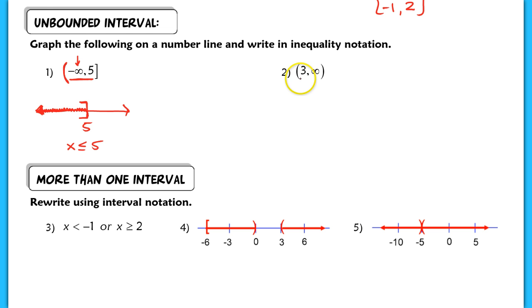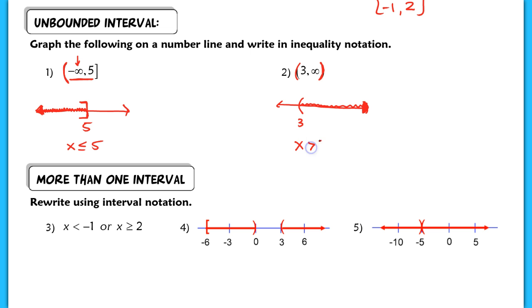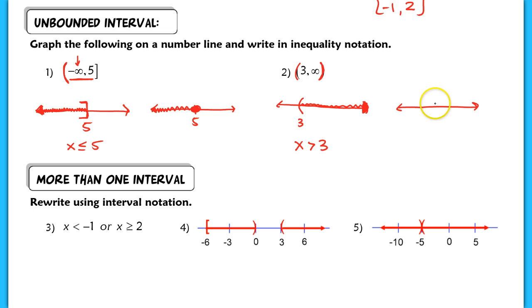In example 2, if we wanted to show all numbers between 3 and infinity, you have an open parenthesis on the 3, so that is not included. We would shade to the right with a parenthesis on 3, denoting all numbers strictly greater than 3: x > 3. I'll also make sure you have it drawn as a normal number line without interval notation, since not all books use that style.